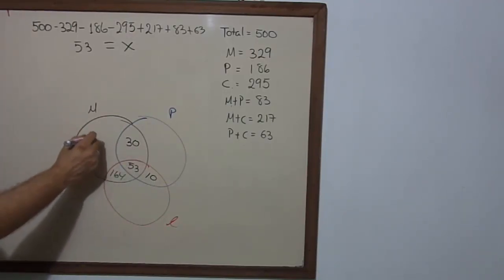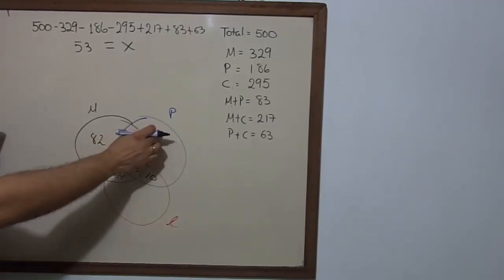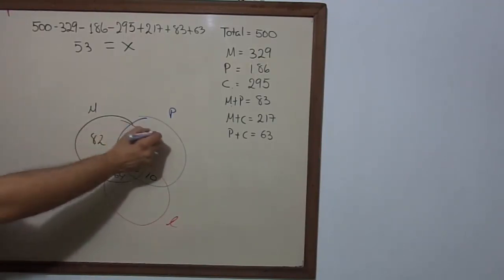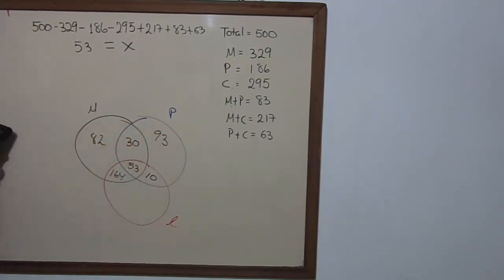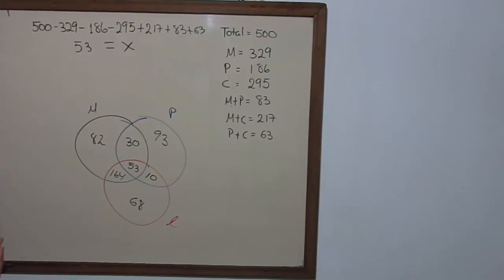Since the black set (math) is 329: 329 minus 164 minus 53 minus 30 gives us 82. Physics is 186 minus 30 minus 53 minus 10, and you get 93. And chemistry is 295 minus 164 minus 53 minus 10.